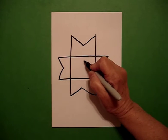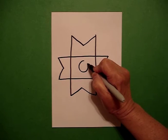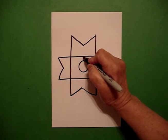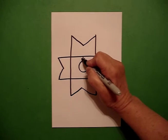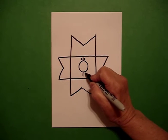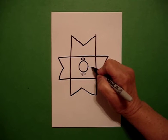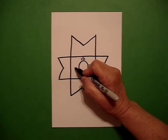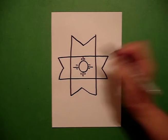Right in the center, I'm going to draw a circle and I'm going to draw one straight line and two littles, one straight line and two littles, one straight line, two littles, one straight line, two littles.